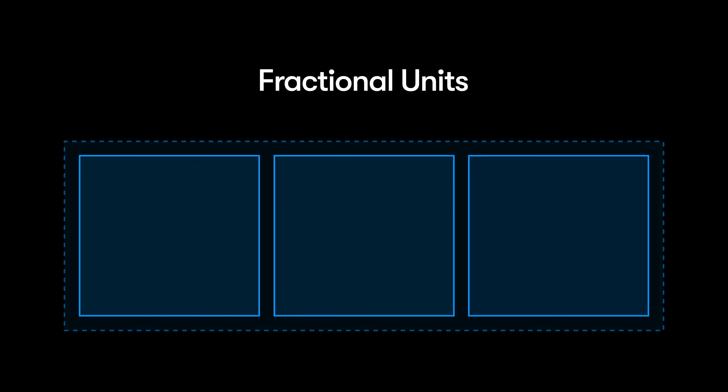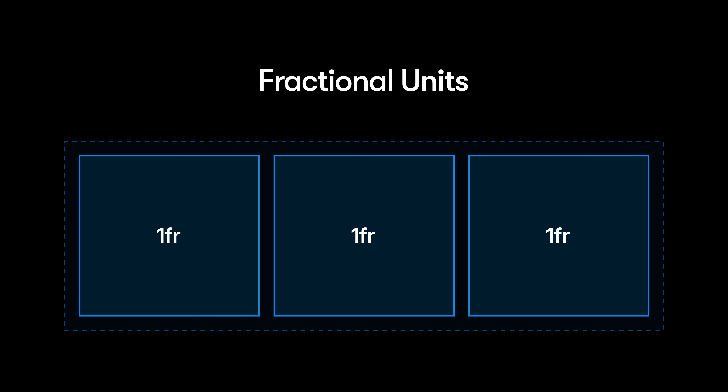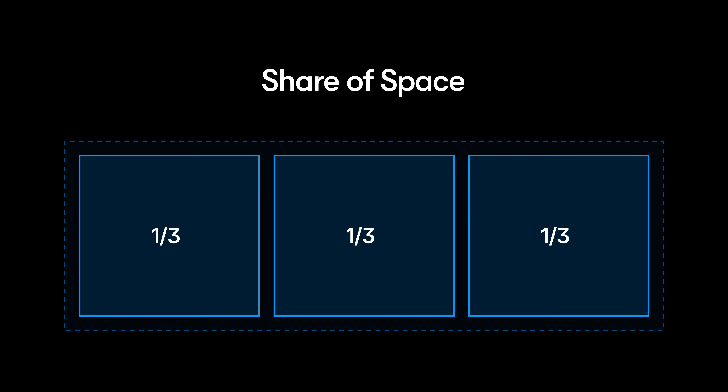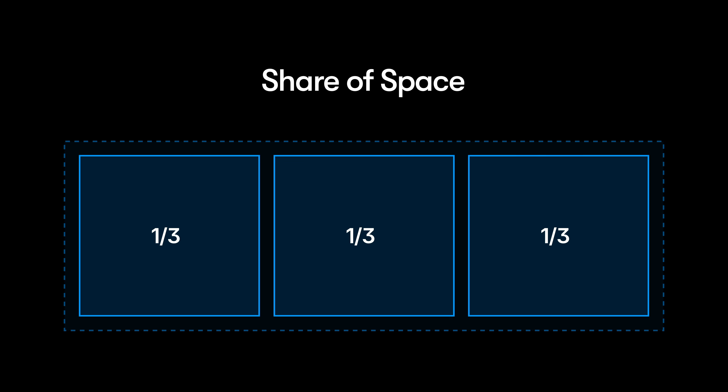The magic of fractional units is the math they do for us when multiple sibling layers are set to fill. All we need to do is decide what portion of the available space should go to each layer. For example, if we have three relative position siblings in a horizontal stack, each set to 1 FR, each one is requesting one portion of the space. With three portions being requested, each portion is one out of three — or one-third. Sure enough, each frame set to 1 FR gets a one-third share of the available space.